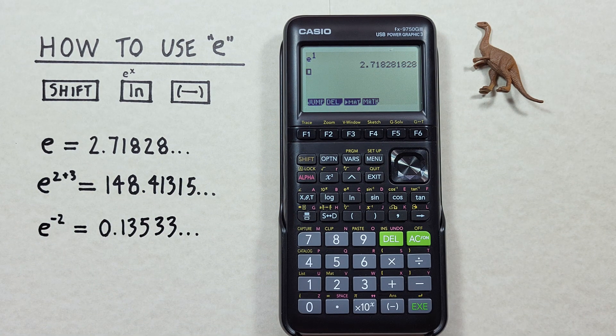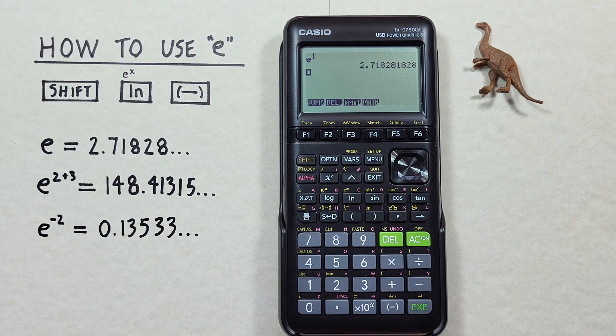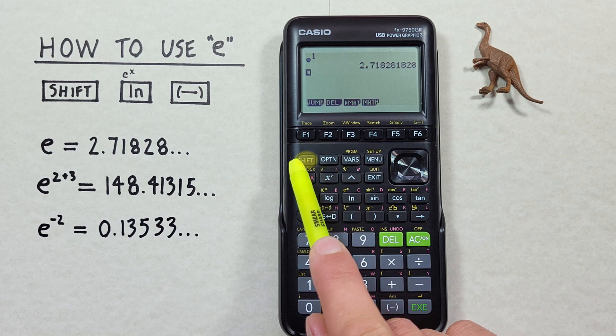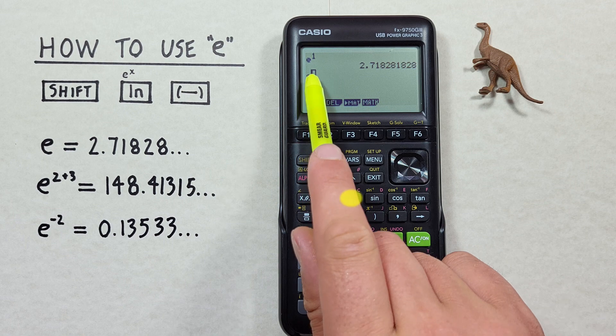If we want to get E to an exponent, for example E to the power of 2 plus 3, again we start with the shift and then the ln key, which gives us our E to the exponent.